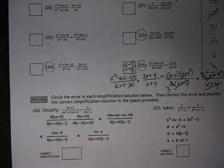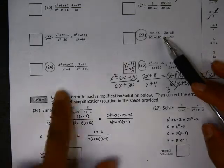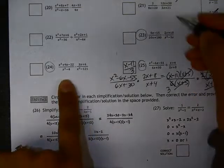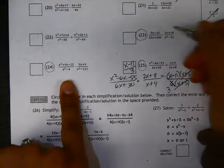This is worksheet 23.2 and we're going to do multiplying rational expressions on problems 23 and 24. We need to factor as many terms as we can and then cancel.